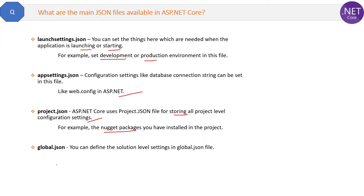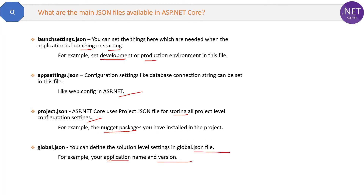Then we have the global.json file. Here you can define solution-level settings. One is project-level information and another is solution-level information. Solution-level information is stored in global.json, such as the names of the applications and the versions in the solution.